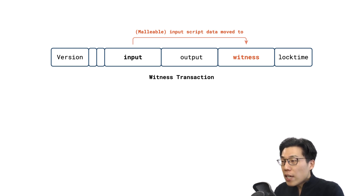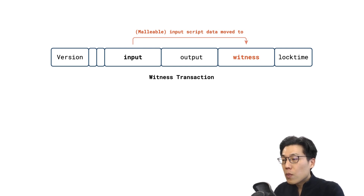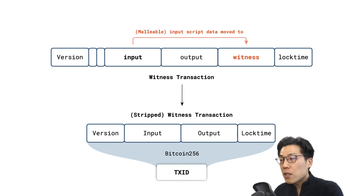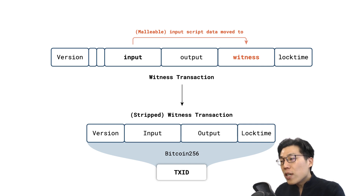This new data structure is called the witness, and this is where the previous input script information has now been moved to. The transaction ID, however, is still derived from the old transaction serialization format, which strips the same transaction of its witness field. So now that transaction malleability has been solved, let us look at how a witness transaction is validated.